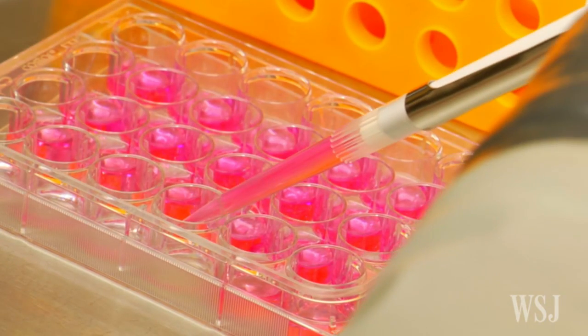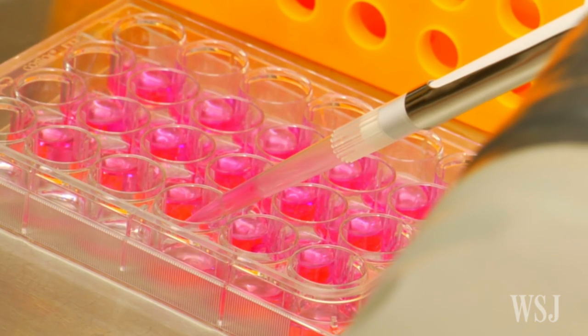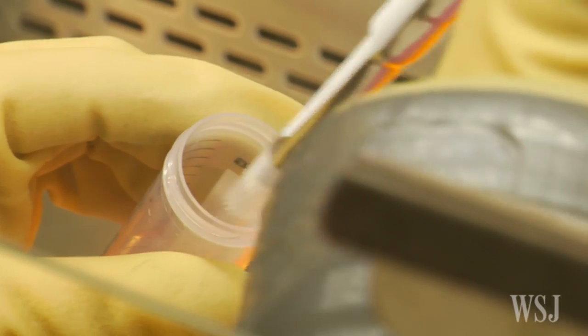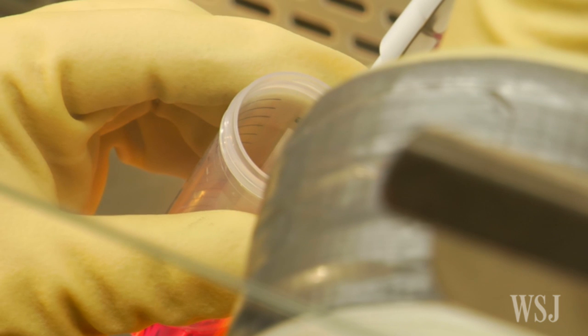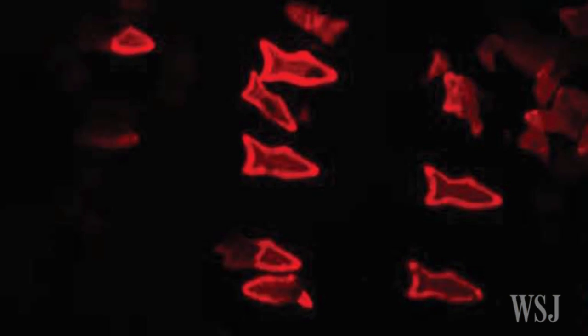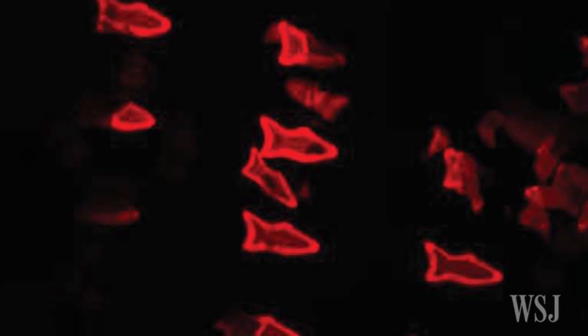To demonstrate how that would work, the scientists inserted toxin neutralizing nanoparticles into the micro fish bodies and put them into a solution filled with toxins. The robotic fish turned a fluorescent red as the particles bound with the toxins to clean the solution. The brighter the color, the harder the fish were at work.